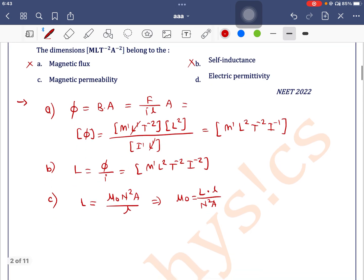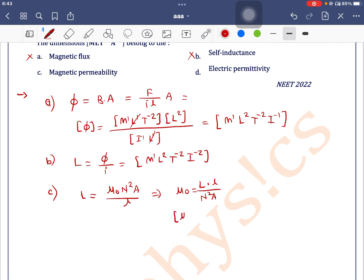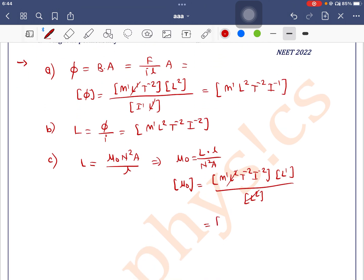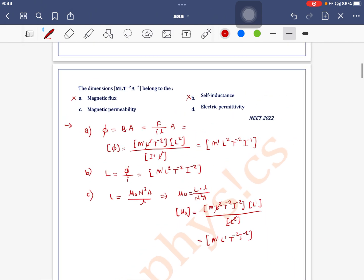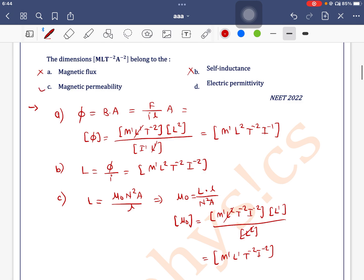So dimension of μ₀ is... what is capital L? Capital L dimension is M¹L²T⁻²I⁻². And dimension of length is L¹ and dimension of area is L². So this L², L² get cancelled out, we'll have M¹L¹T⁻²I⁻². So this is matching with the given data, means correct answer is option C.